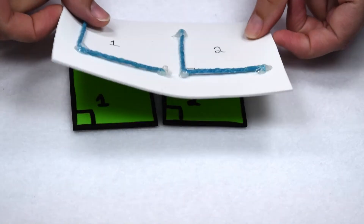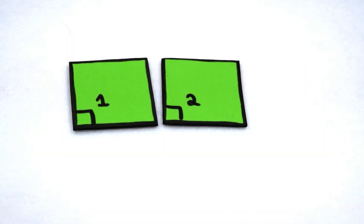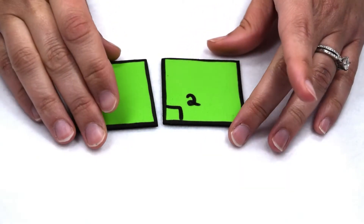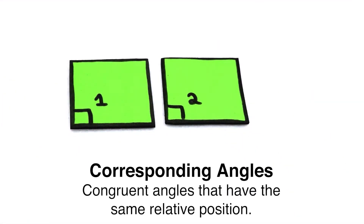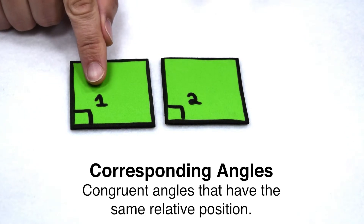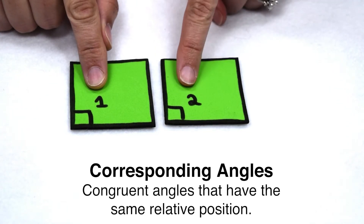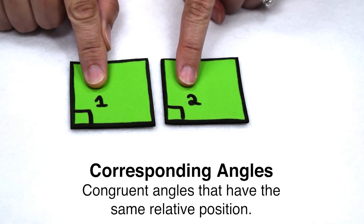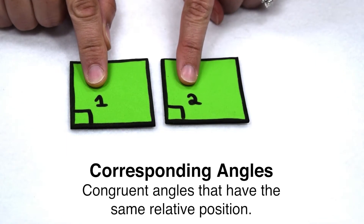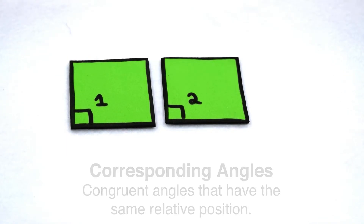There are several different ways to have congruent angles. One way is through corresponding angles. Corresponding angles are congruent angles that have the same relative position. So here in our squares, angle 1 and angle 2 would be corresponding angles because they both measure 90 degrees and they're both in the bottom left-hand corner of our square.